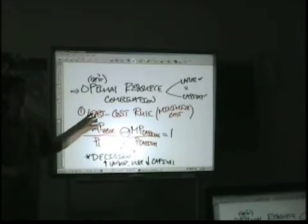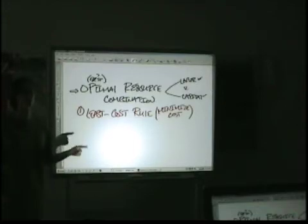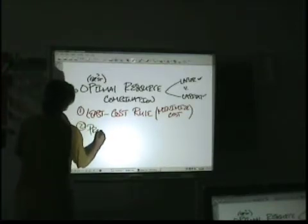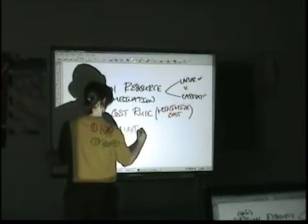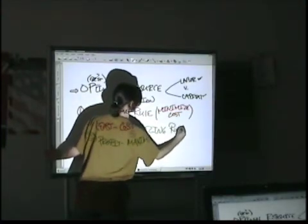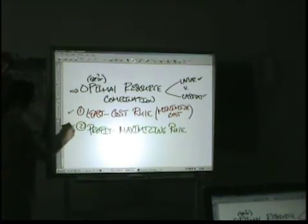So, that's getting us to the minimizing cost part of what the firm wants to achieve. So, we want to minimize cost. The other part, remember, is to maximize profit. So, we want the least cost combination that is the profit maximizing combination. Minimize cost. Maximize profit.